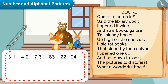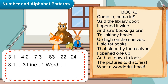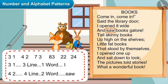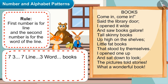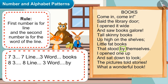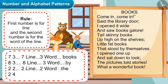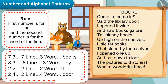Chatura, now please tell. Okay, listen carefully — 31 means third line, first word. So next, 42 will mean fourth line, second word. Yes, right. So the rule is: the first number is for the line and the second number is for the word of that line. So 73 means seventh line, third word; 83 means eighth line, third word; 22 means second line, second word; and 24 means second line, fourth word.